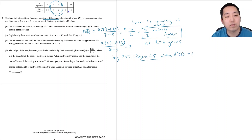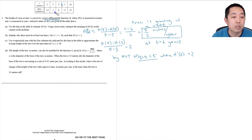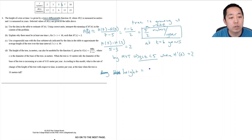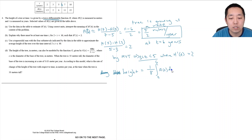So I actually have a narrower window — I was just looking for a time where the slope was 2. Now, use a trapezoidal sum with four subintervals indicated by the data to approximate the average height of the tree over the time interval. The average height equals 1 over the interval length times the integral from 2 to 10 of h of t dt, which is 1/8 times that integral. I'm approximating this integral by a trapezoidal sum.